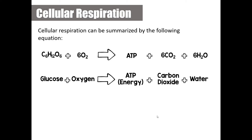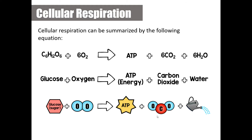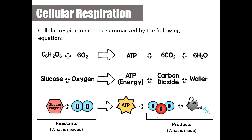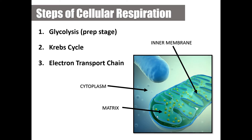Glucose and oxygen are the inputs — the reactants — and they generate ATP. Carbon dioxide and water are byproducts. Energy is not technically a product since it is not created or destroyed, just converted from one form to another. There are three steps of cellular respiration: glycolysis, which is a prep stage; the Krebs cycle; and the electron transport chain.